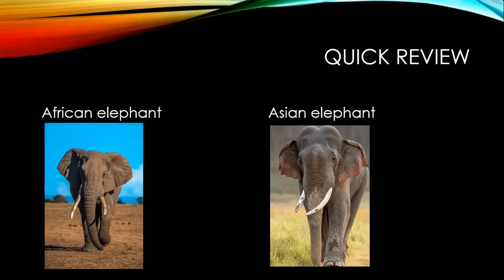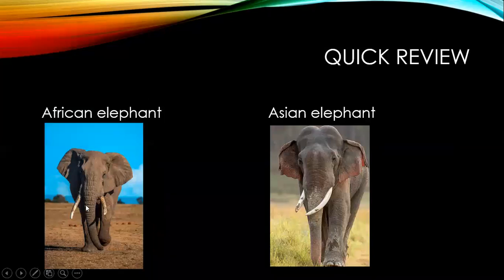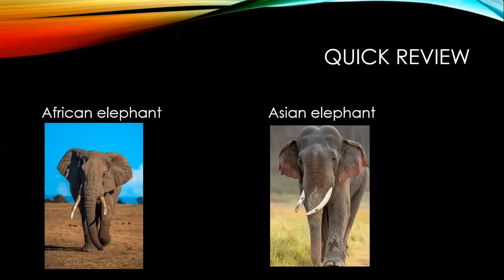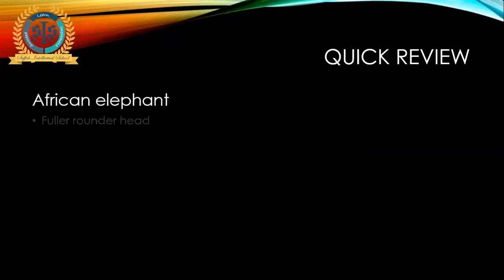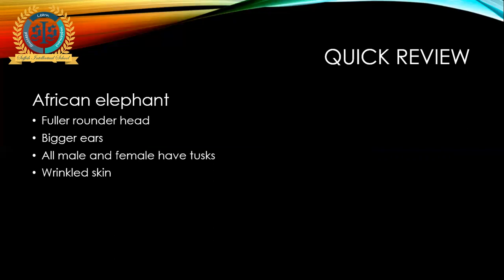Now we will do a quick review on African elephant and Asian elephant. African elephant has big ears compared to Asian elephant which has smaller ears. The African elephant has more wrinkles on its trunk, with wrinkles and lines and indents. The Asian elephant has smoother skin with fewer lines. The tusk style is similar, but only male Asian elephants have tusks, not female. African elephant has a fuller rounded head, bigger ears, all male and female have tusks, wrinkled skin, and a heavily wrinkled soft trunk.